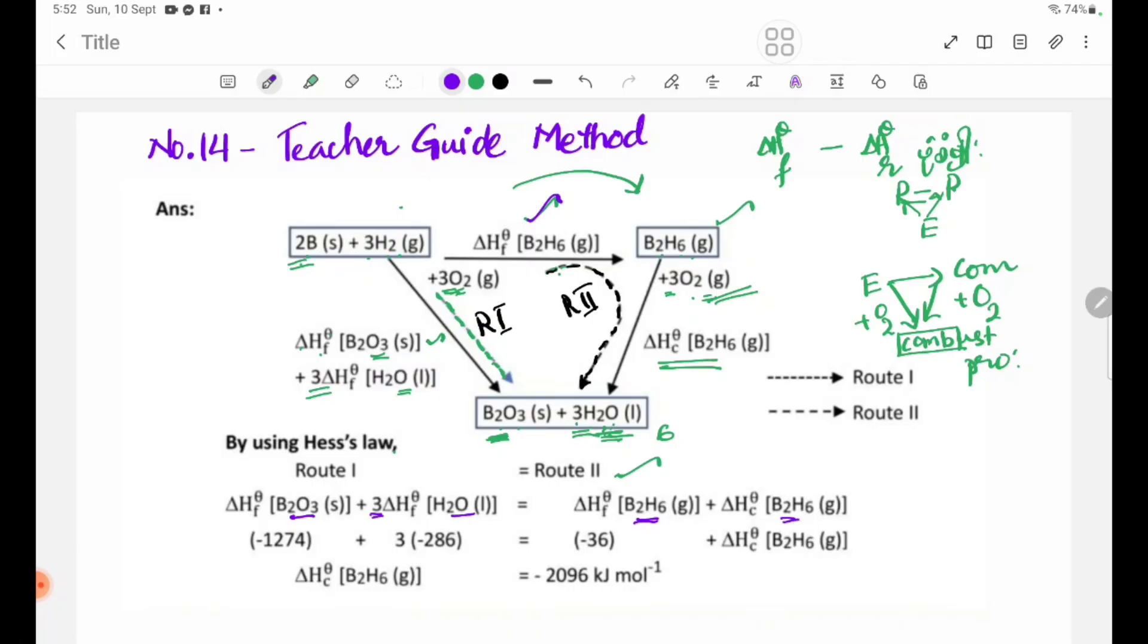B2O3 has delta H formation of -1274 kJ/mol, and H2O has delta H formation of -286 kJ/mol times 3. Delta H combustion B2H6 equals -2096 kJ/mol.